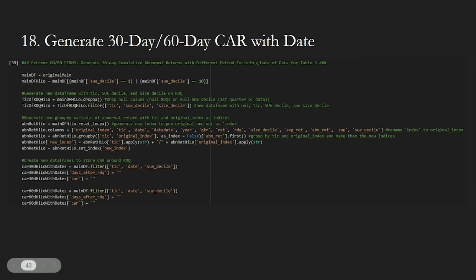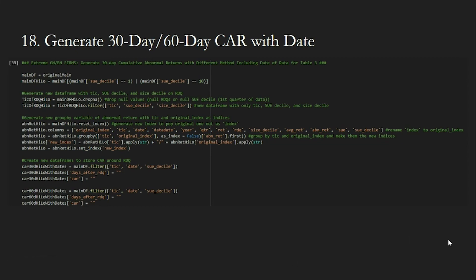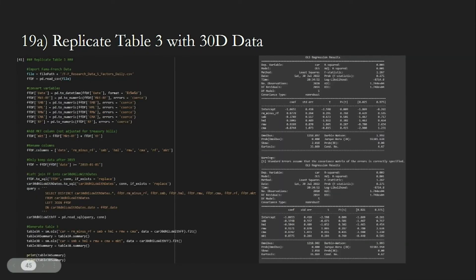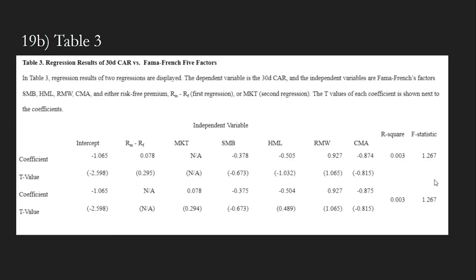Next, we run the five-factor regression for Table 3. To do so, we filter for only extreme bad news — SUE decile 1 — and extreme good news — SUE decile 10 — and get the abnormal returns again. We get the 30-day and 60-day after RDQ CAR data with the date to replicate Table 3 and Figure 5. We then import the Fama-French five-factor data to run the regressions. After cleaning the Fama-French data, we merge it into the 30-day period data frame and run regressions on two types of five-factors: one with equity risk-free premiums and one with market returns. The R-squared value is only 0.003 for both regressions, suggesting that the five-factor model does not sufficiently explain the CAR drift.